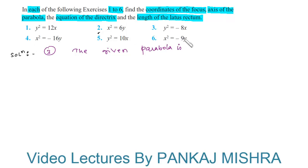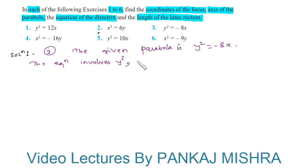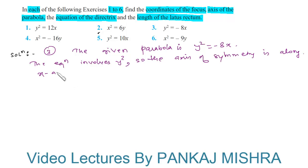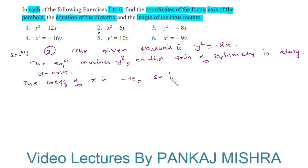In the third question, the given parabola is y² = −8x. Since the equation involves y², the axis of symmetry is along the x-axis. Also, the coefficient of x is negative, so the parabola opens to the left.